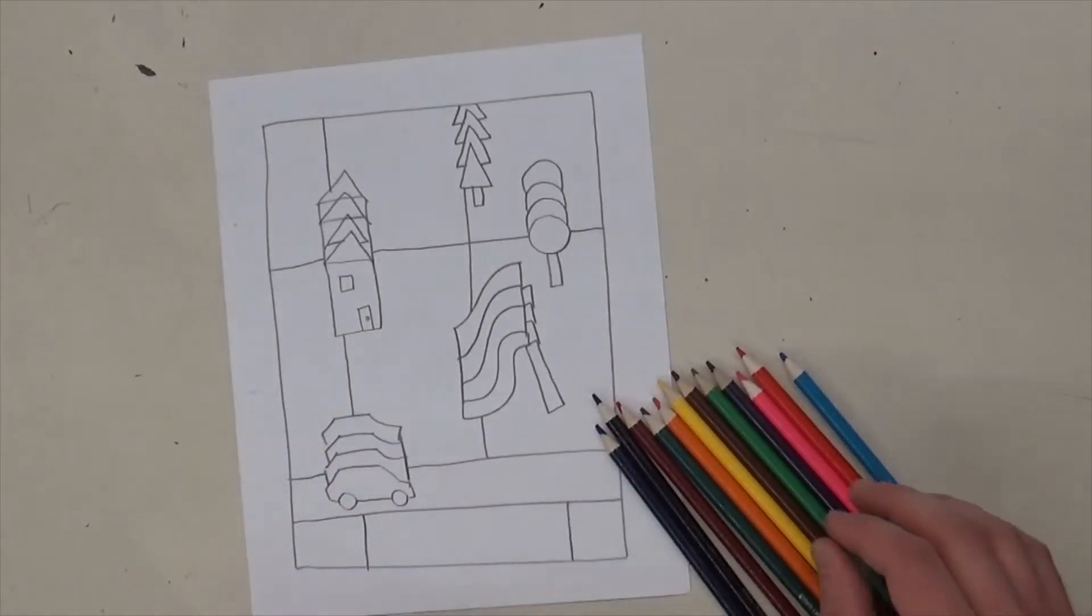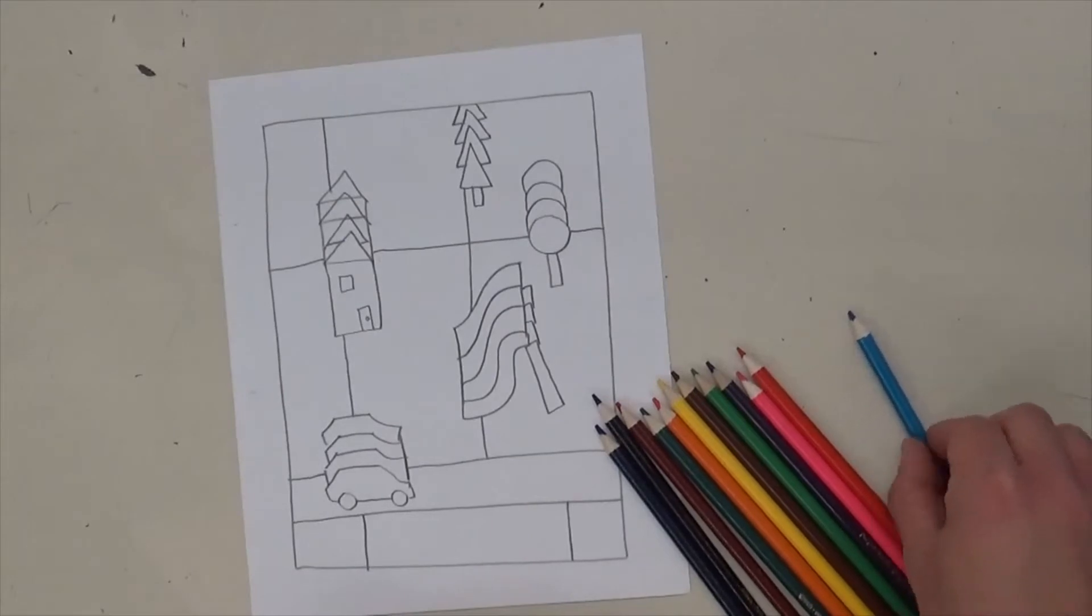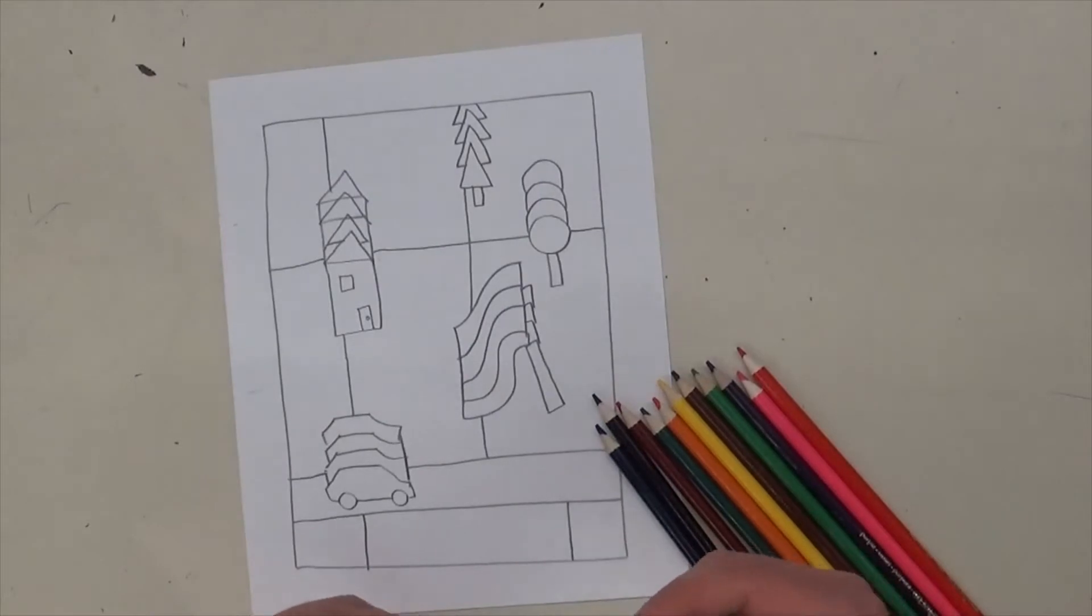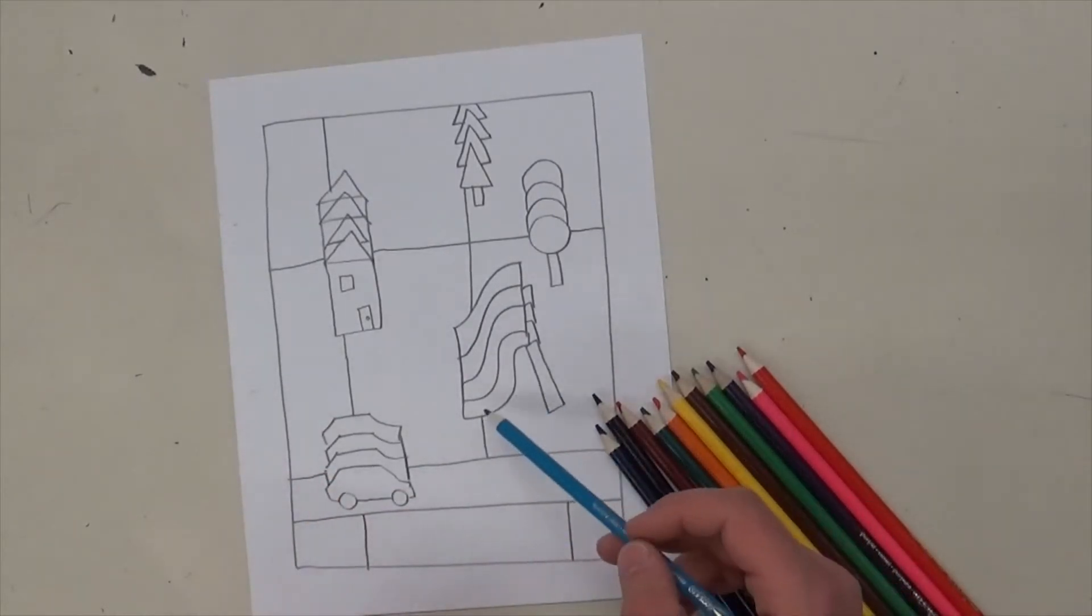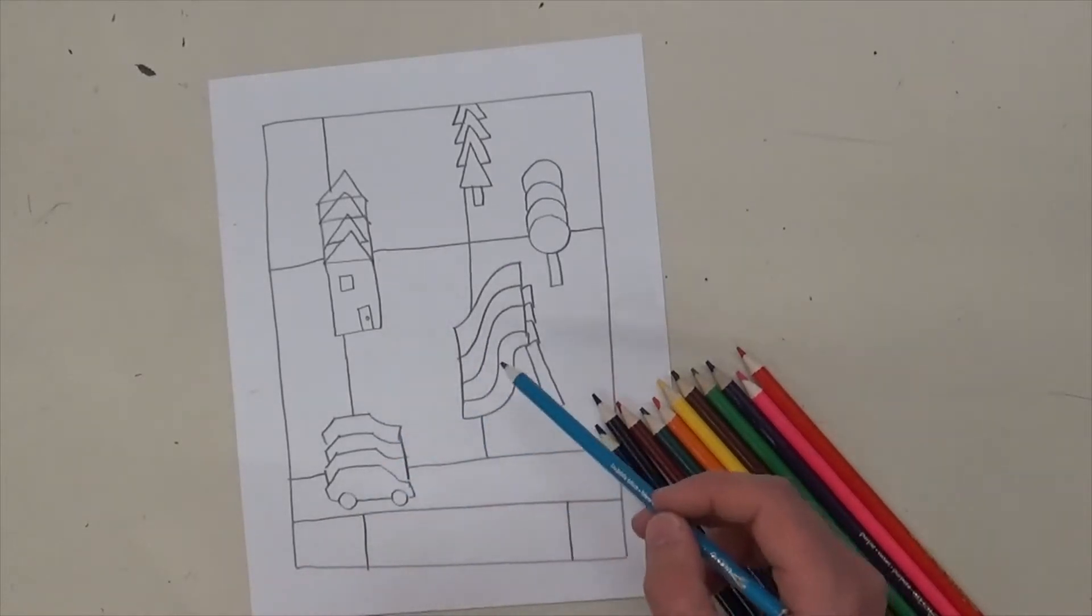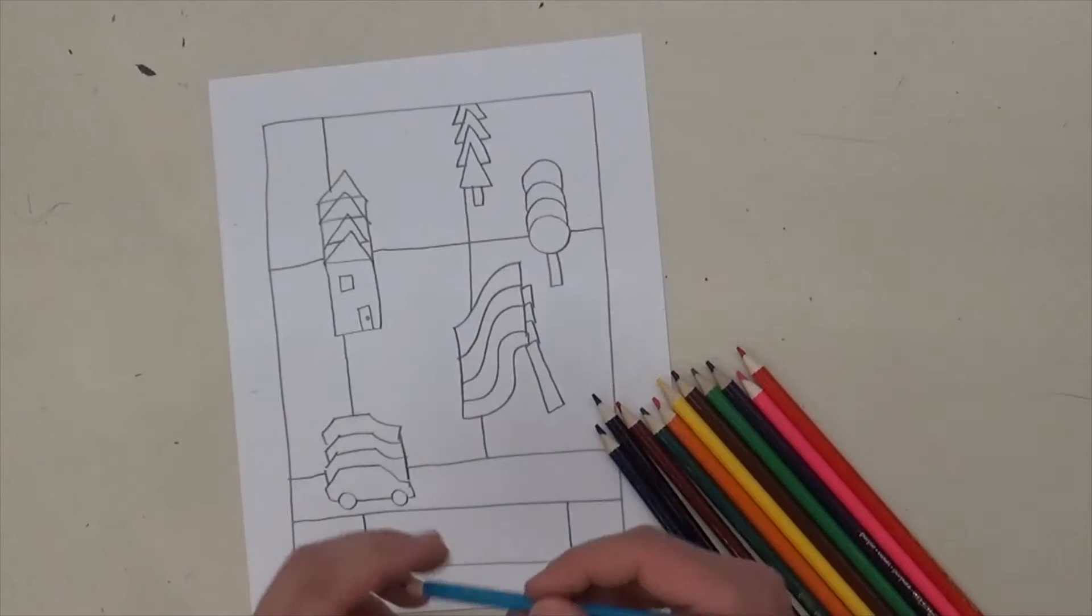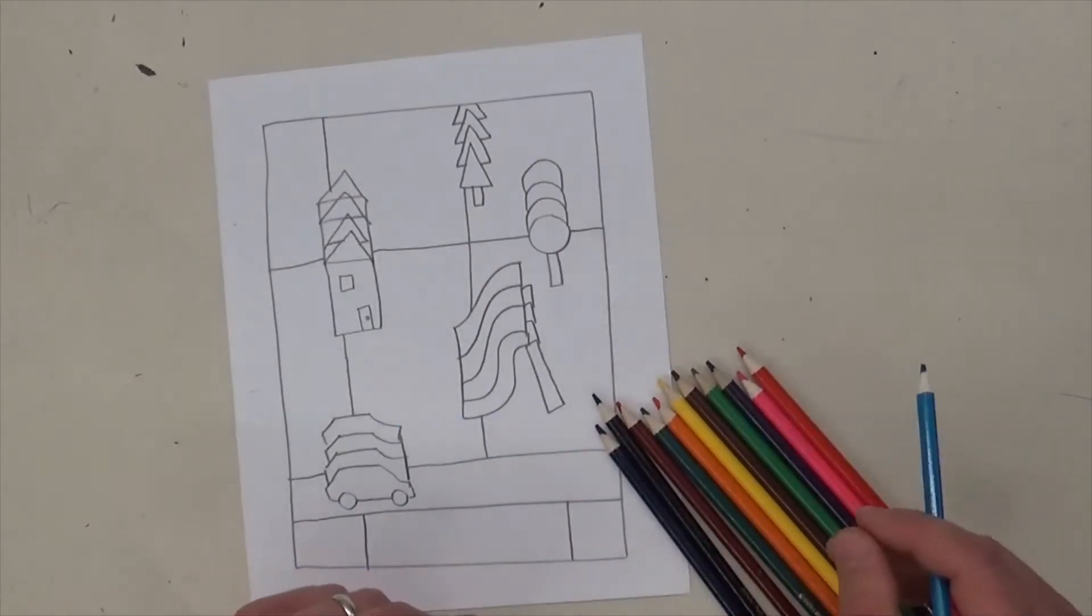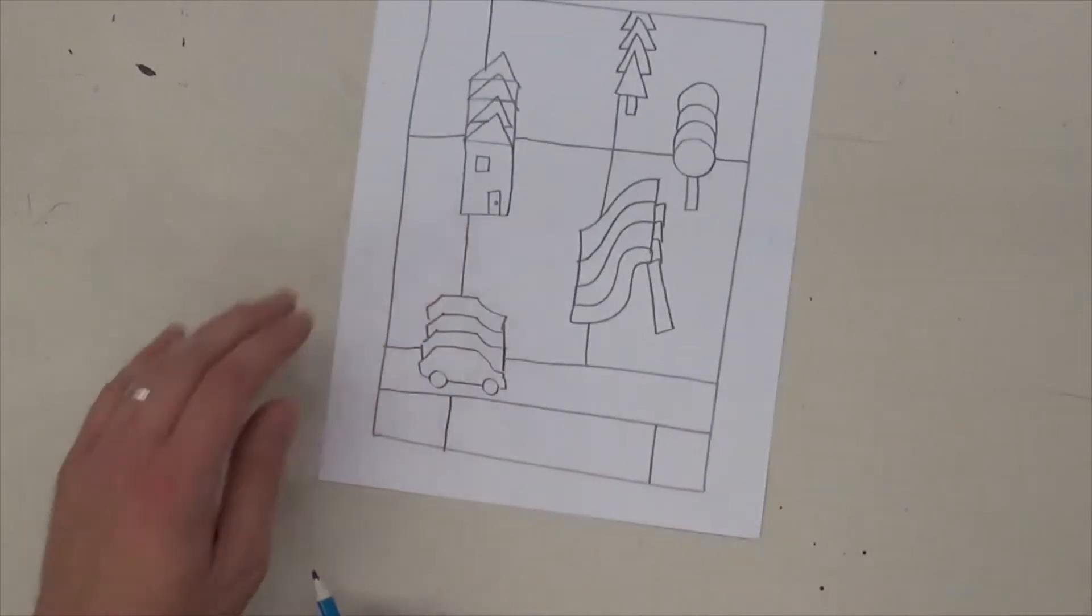So pick a color, it doesn't matter. You could do everything the same color. I'm going to change it up. But for Paul Klee's Dream City, it's basically like a greenish blue. So he would just make it a little bit darker each time for each shape. But for every object I have, I'm going to use a different color just to change it up. He'd do that sometimes in his art too.